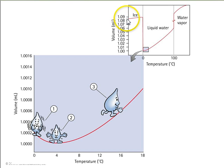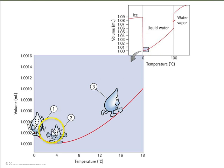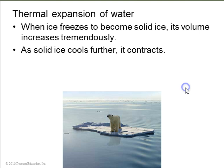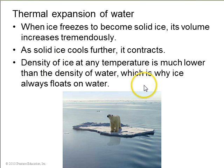One gram of ice has a volume of about 1.09 milliliters. If it melts and becomes water, that volume drops down — it becomes more dense. Zooming in, the density continues to increase so that the most dense temperature for water is plus four degrees Celsius. If you keep increasing temperature, the water gets less dense again as it expands until it boils, and water vapor has a very low density. So when ice freezes, its volume increases tremendously; and while solid ice will contract a little if cooled further, the density of ice at any temperature is still much lower than the density of water, which is why ice always floats on water.